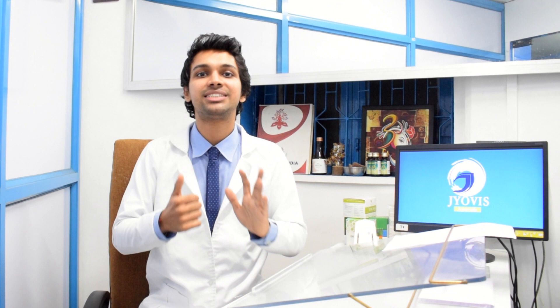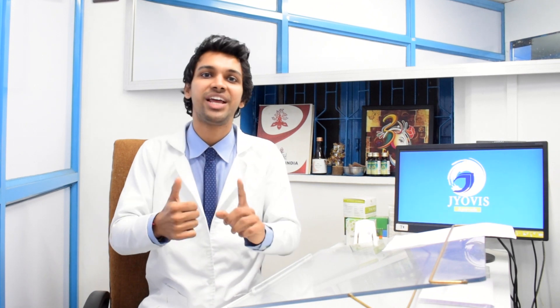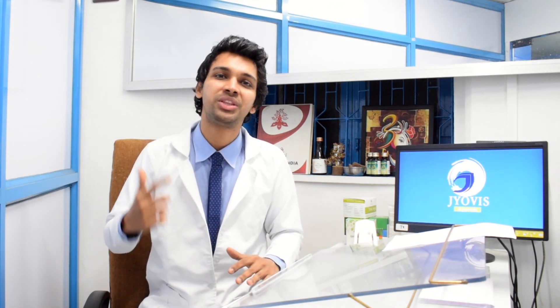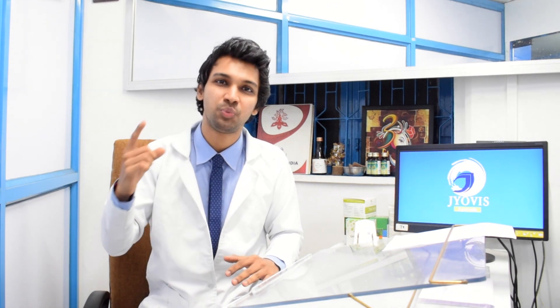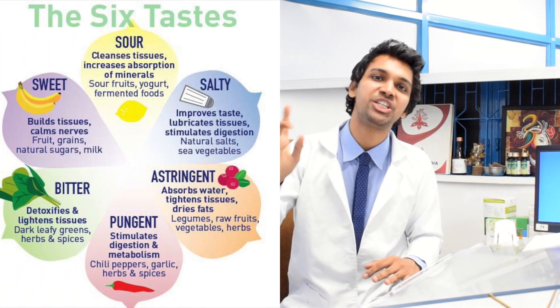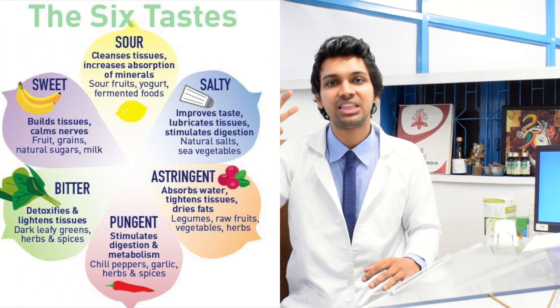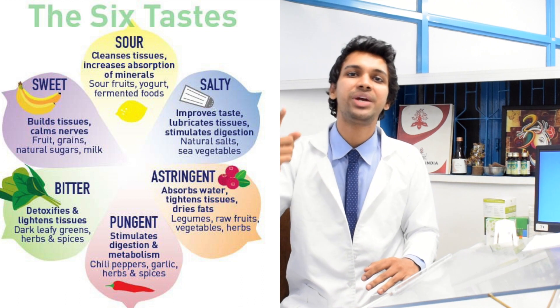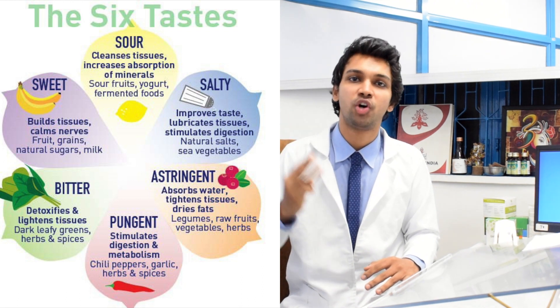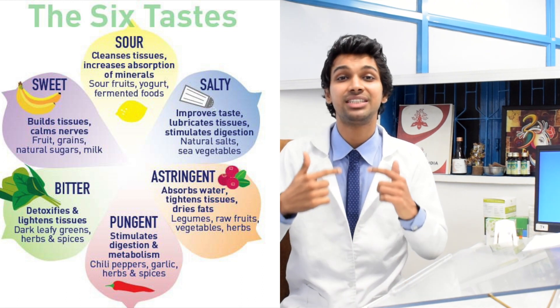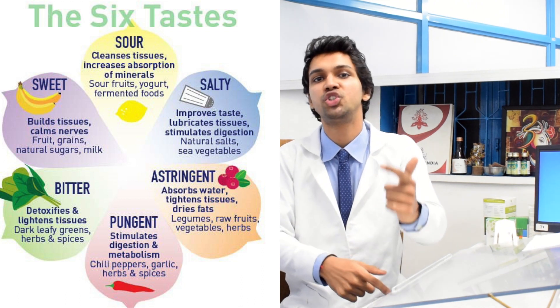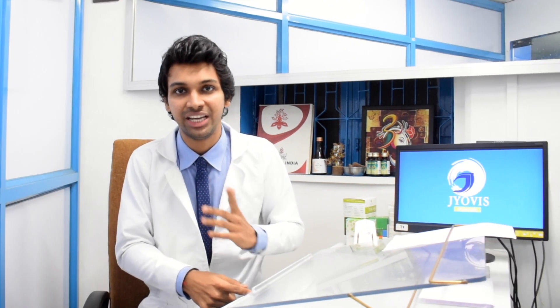There are six tastes explained in Ayurveda: madhur, amla, lavan, kattu, tikt, kashai — that is sweet, sour, salty, pungent, bitter, and astringent. Out of these, the first three — sweet, sour, and salty foods — increase the kapha dosha in the body.